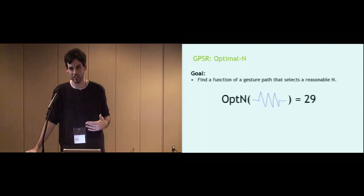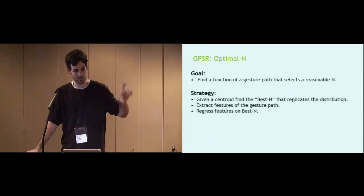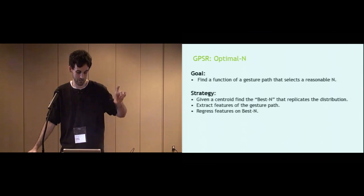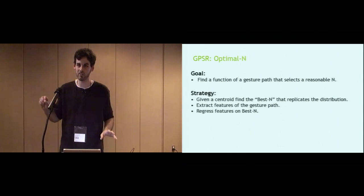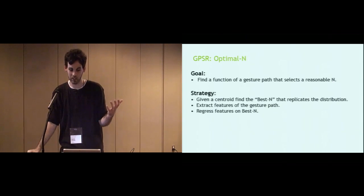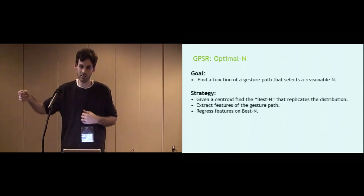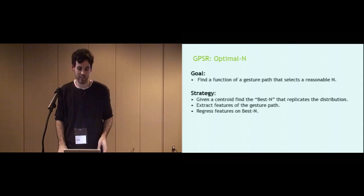What this means is what we want to try to do is find a function of a given sample that will give us a reasonable value of N we can use to create a synthetic distribution. Our strategy for finding that function follows. For a given gesture, we take all the samples that we would use and find the centroid. Using that centroid, we find the dissimilarity to every other sample of that gesture in the data set and take that average of dissimilarity. That gives us a way to characterize the distribution. Then take that centroid, create a bunch of synthetic distributions, each with a different level of N, and find a distribution that most closely resembles the real distribution. Then, with that gesture and other gestures from other data sets, extract features and try to regress those features on the best end to find our function.